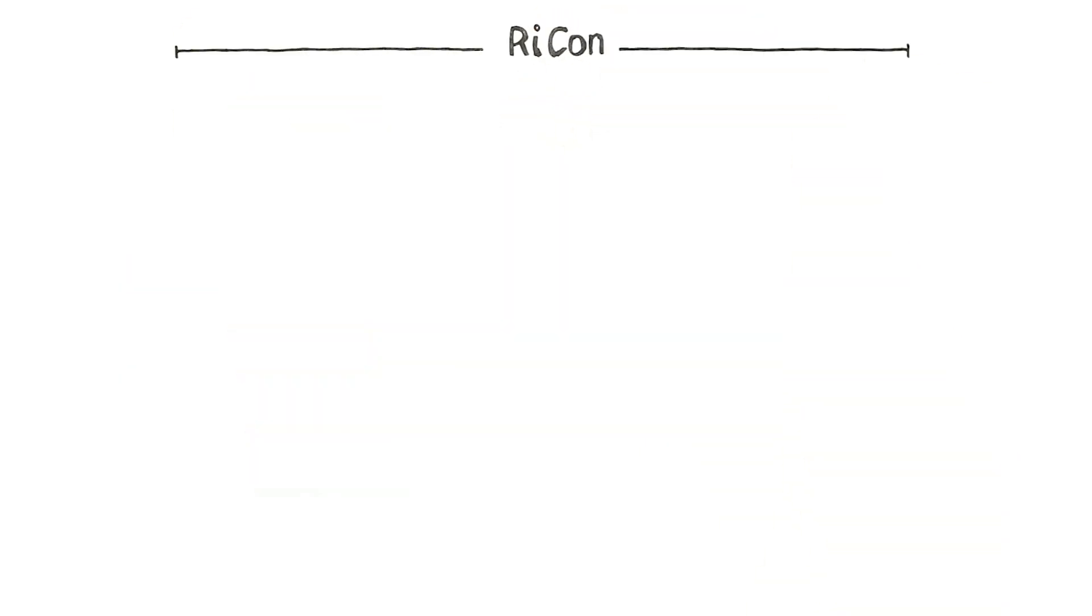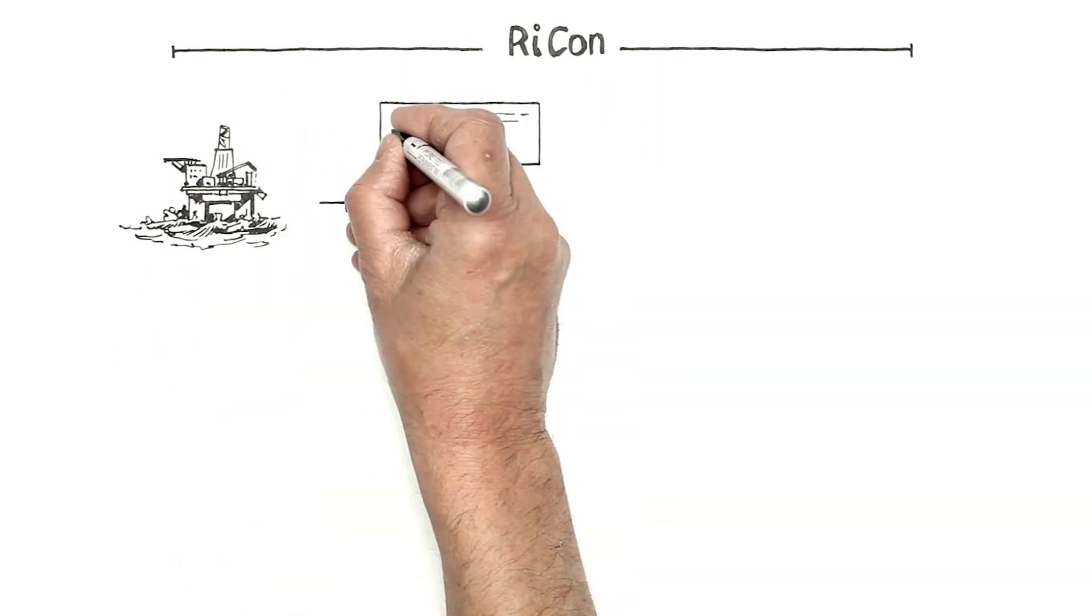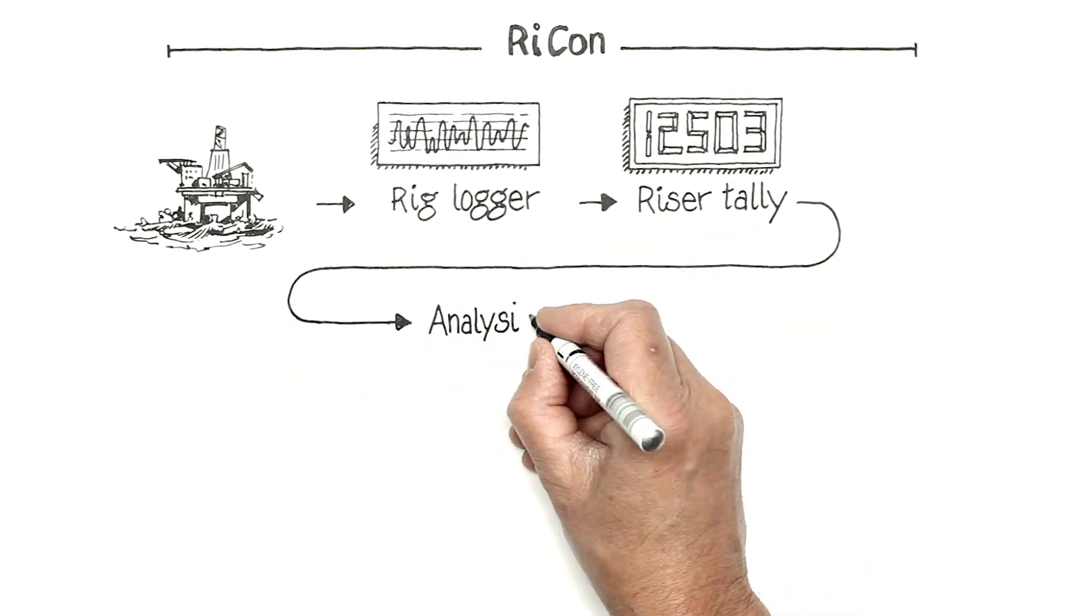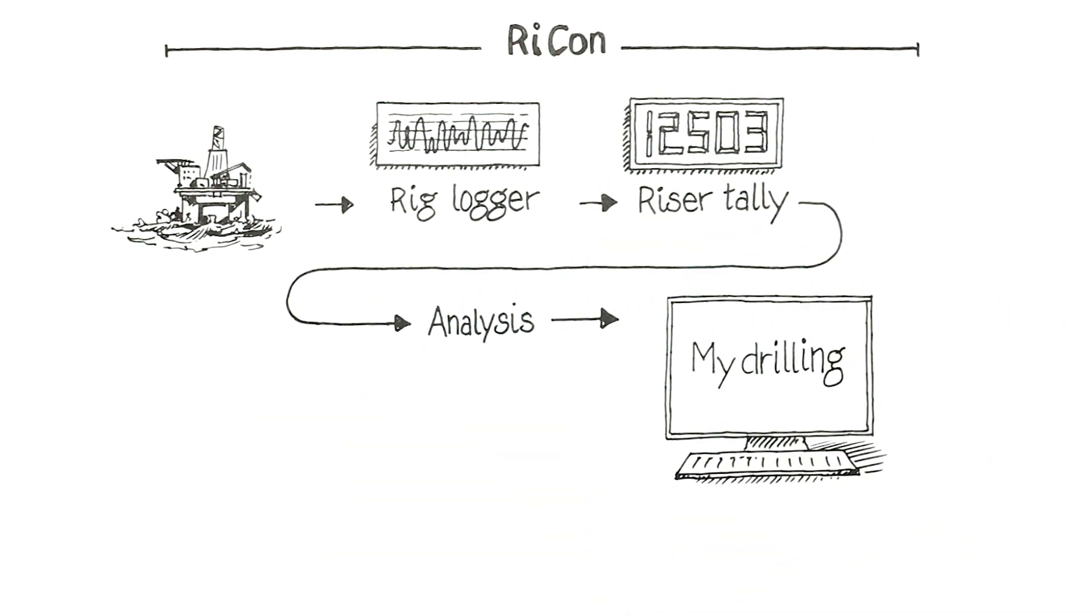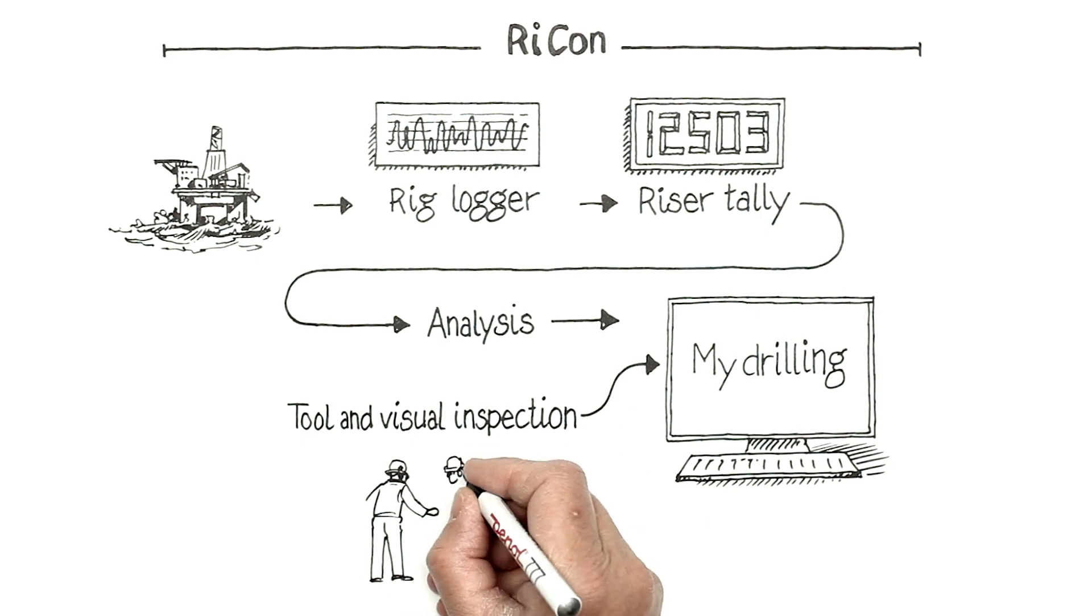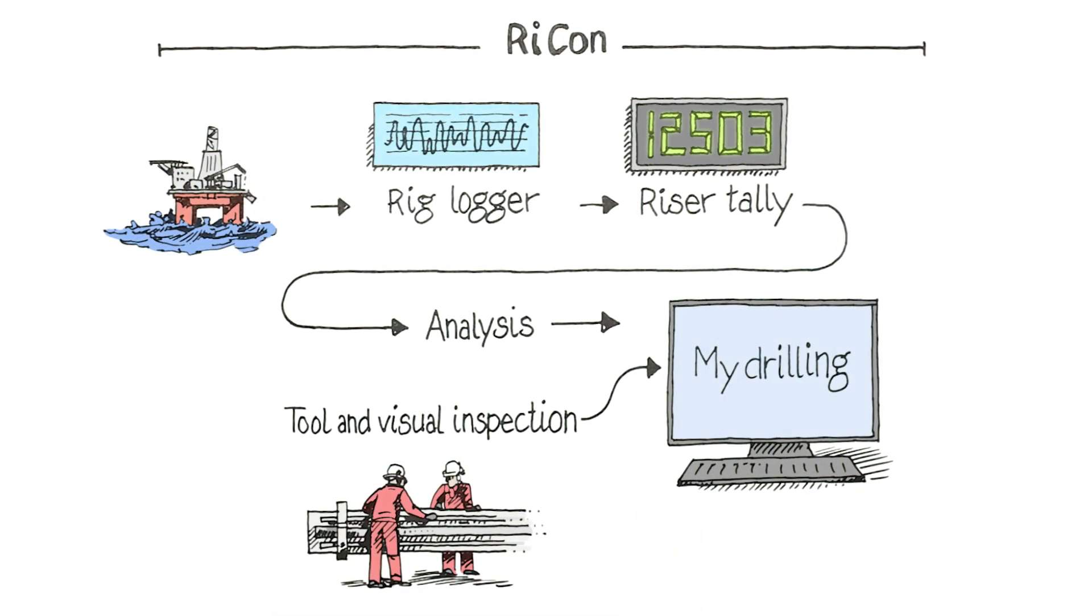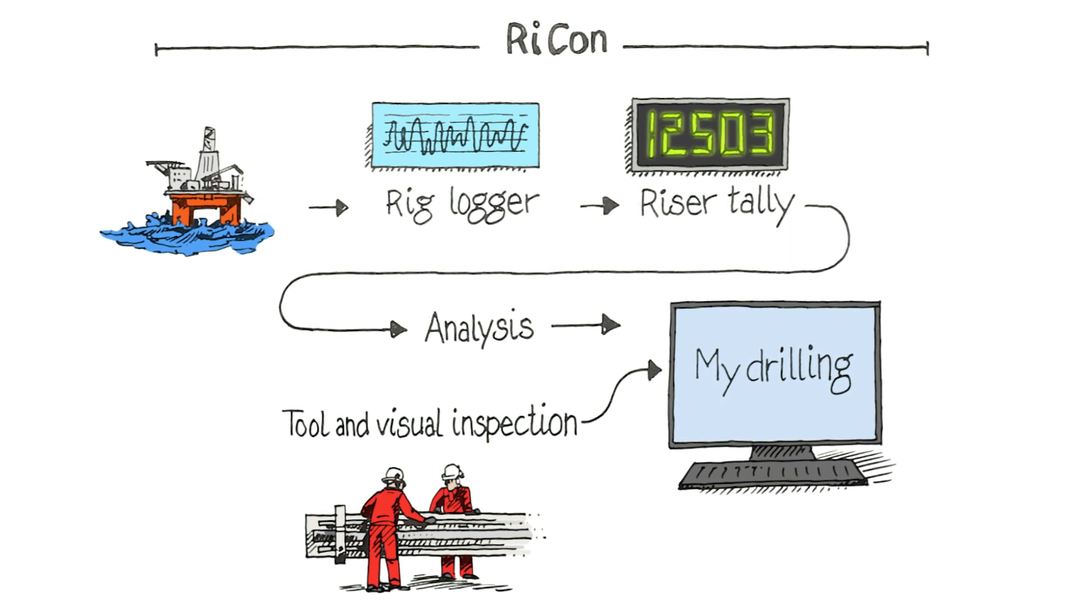To obtain the best performance from the Rikon solution it requires different types of software working together. Each system performs specific tasks to keep the continuous monitoring up to date. The visual inspections performed by the rig crew are also crucial for the system to deliver quality analysis.